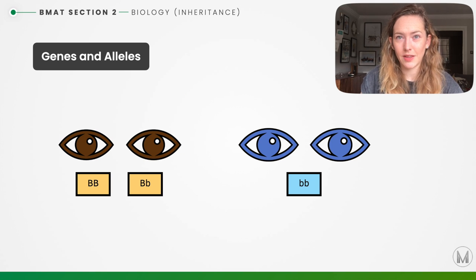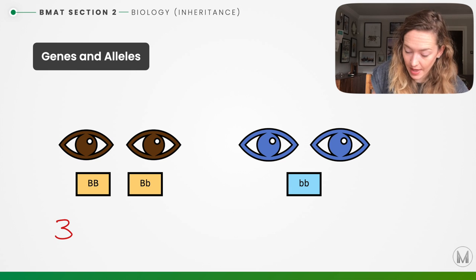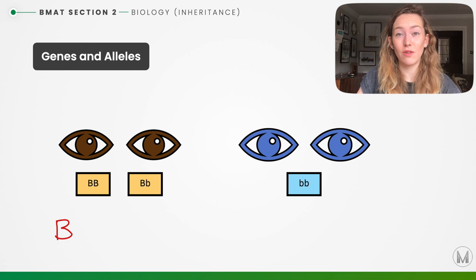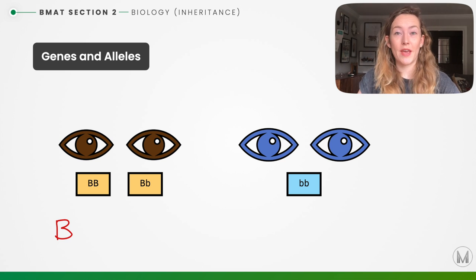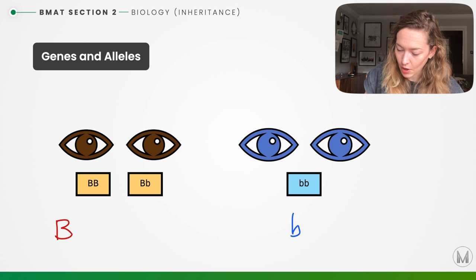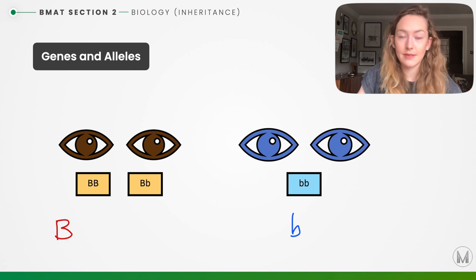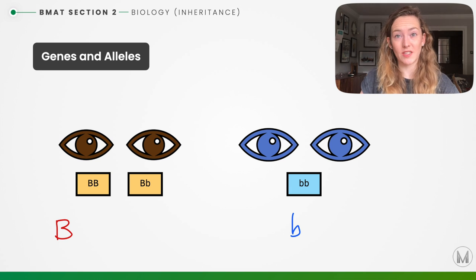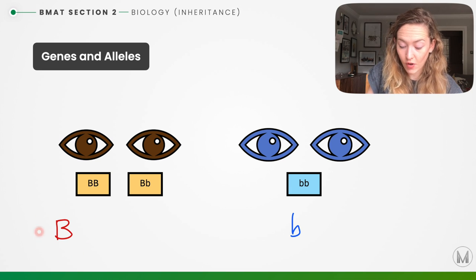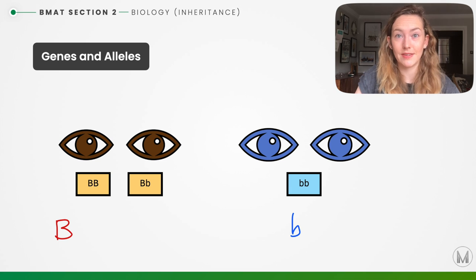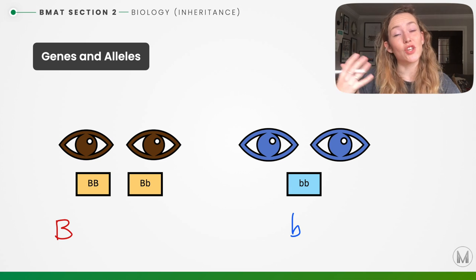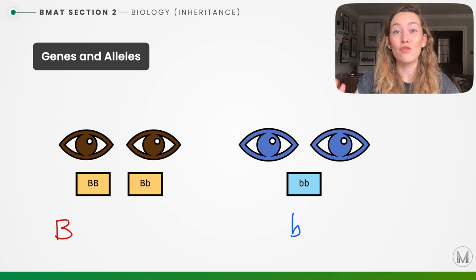When a dominant allele is present it is always expressed in that organism. For example, capital B is the dominant allele — if a person has that allele they're going to have brown eyes. Then we have a recessive allele, which is only expressed in the absence of dominant alleles. Two lowercase b's represent the recessive allele — it is only expressed as blue eyes when no dominant alleles are present. A capital letter signifies a dominant allele and a lowercase letter signifies a recessive allele.